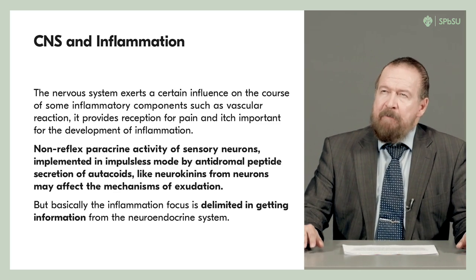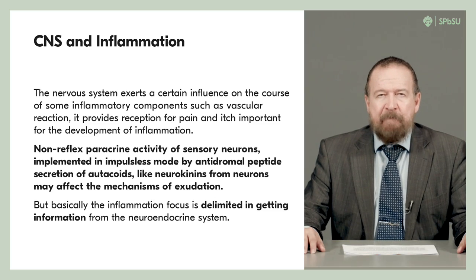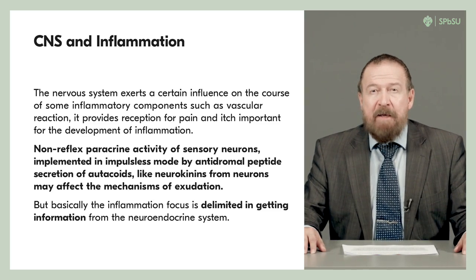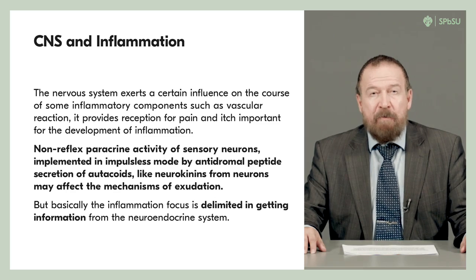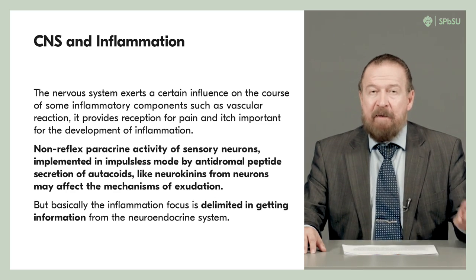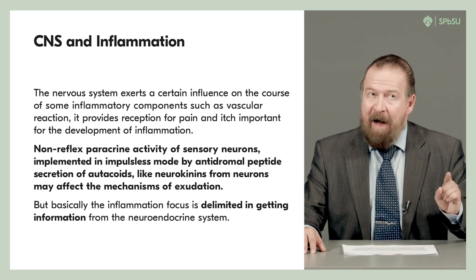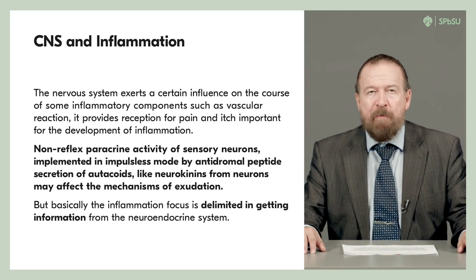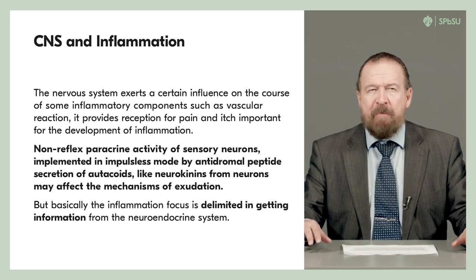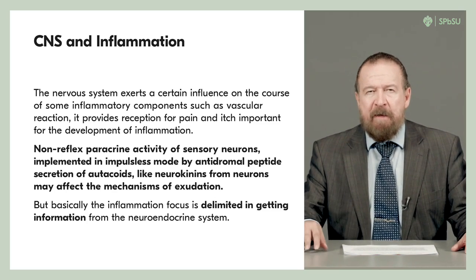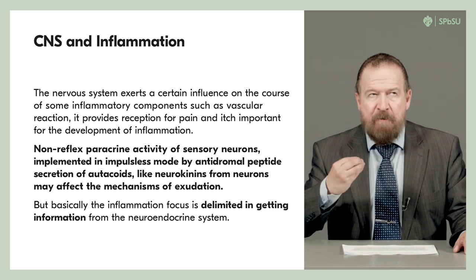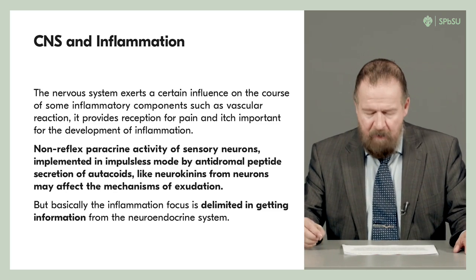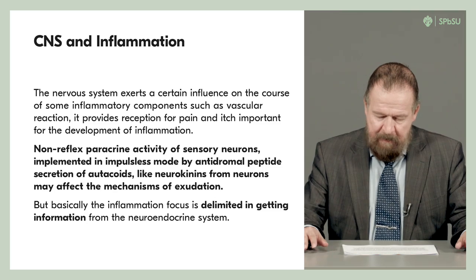Moreover, the neuropeptide action of sensory neurons may even elicit inflammation — so-called neurogenic inflammation. But these neurogenic mechanisms are not purely neural; they are also humoral. The neuron in that case works not as a source of neural impulse and neurotransmitter, but as a source of autacoid signals, like other cells of the inflammatory focus.